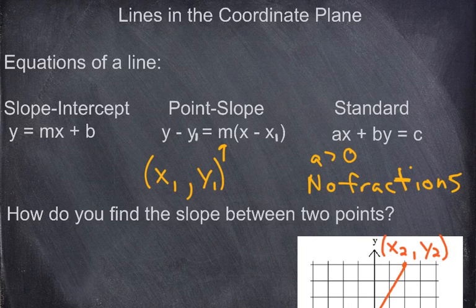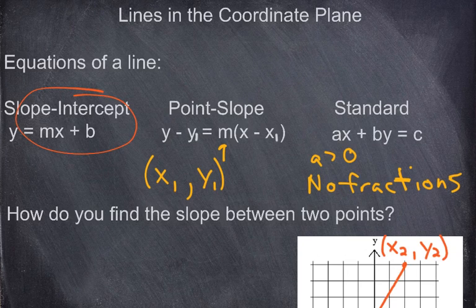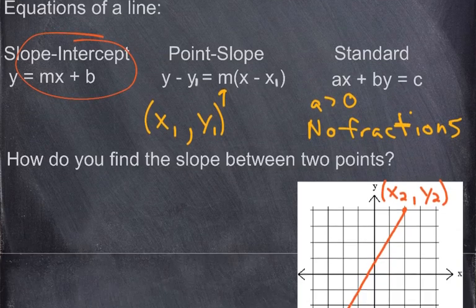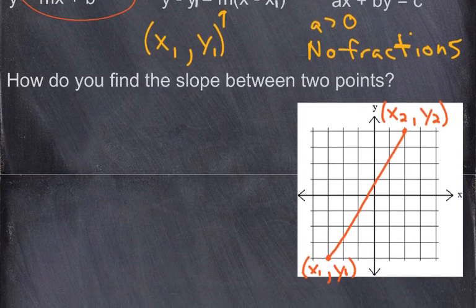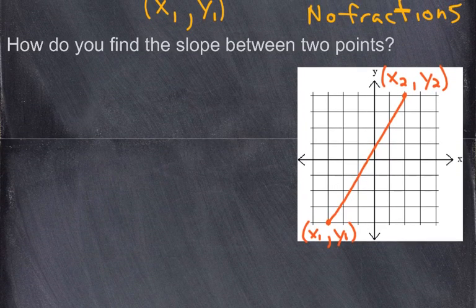So these are the three equations of a line we're going to be using. We're going to focus mainly on slope-intercept, but first let's talk about how do you find the slope between two points.